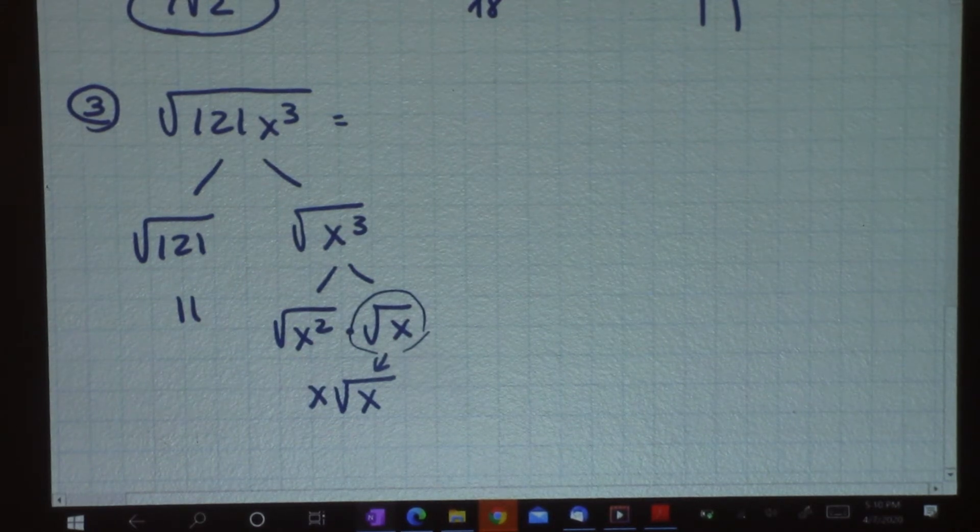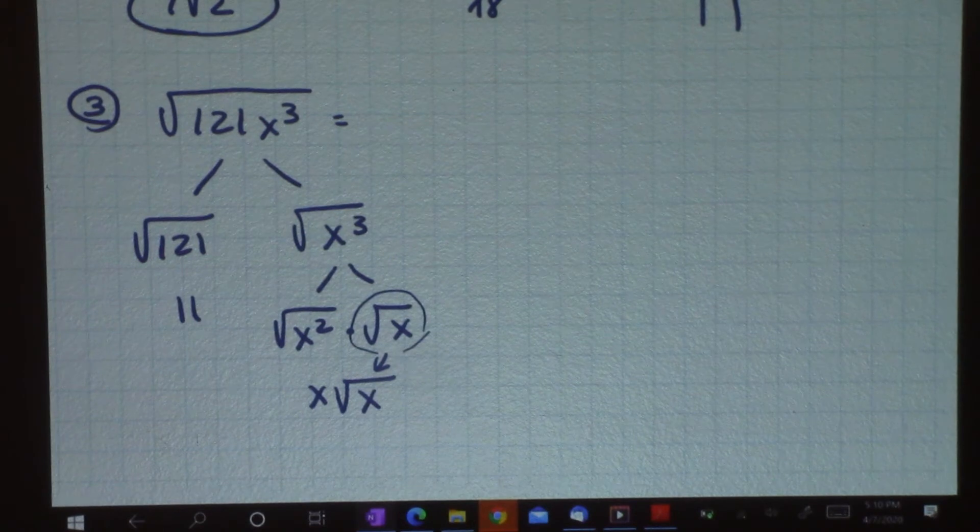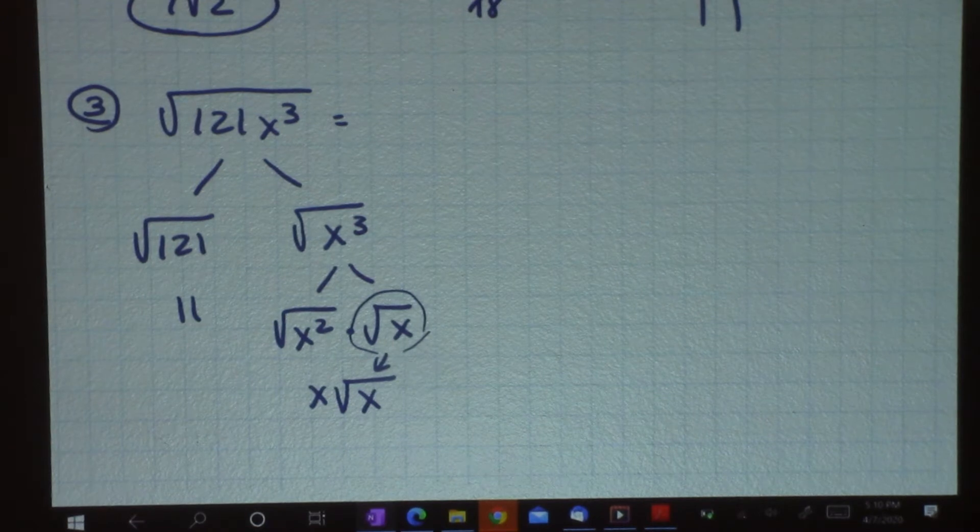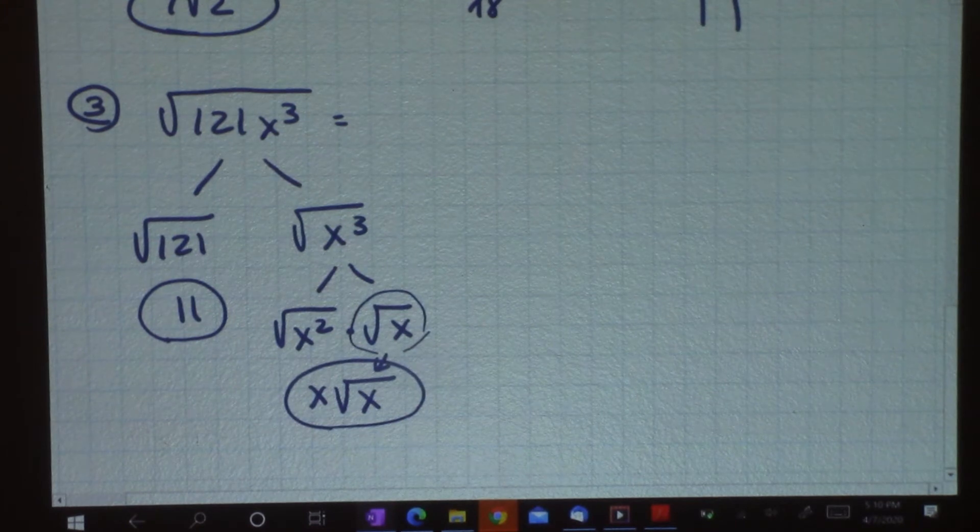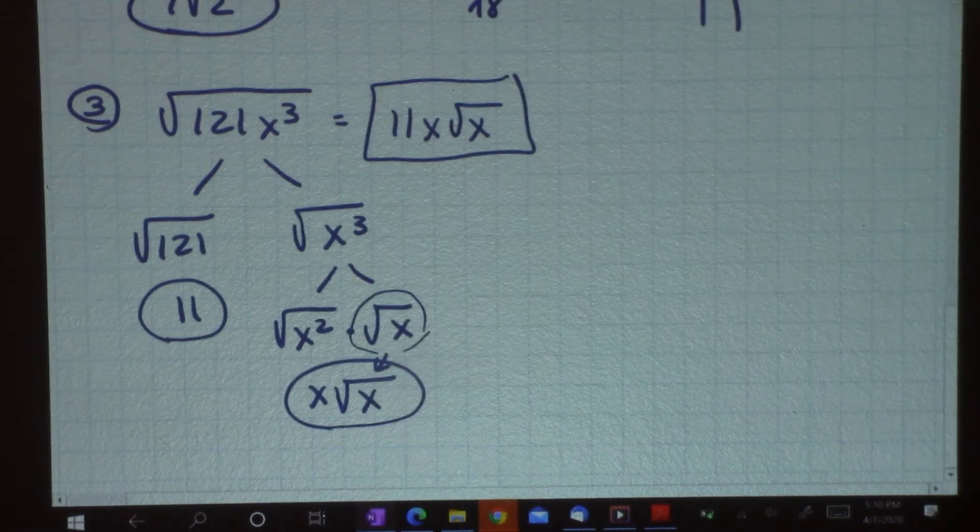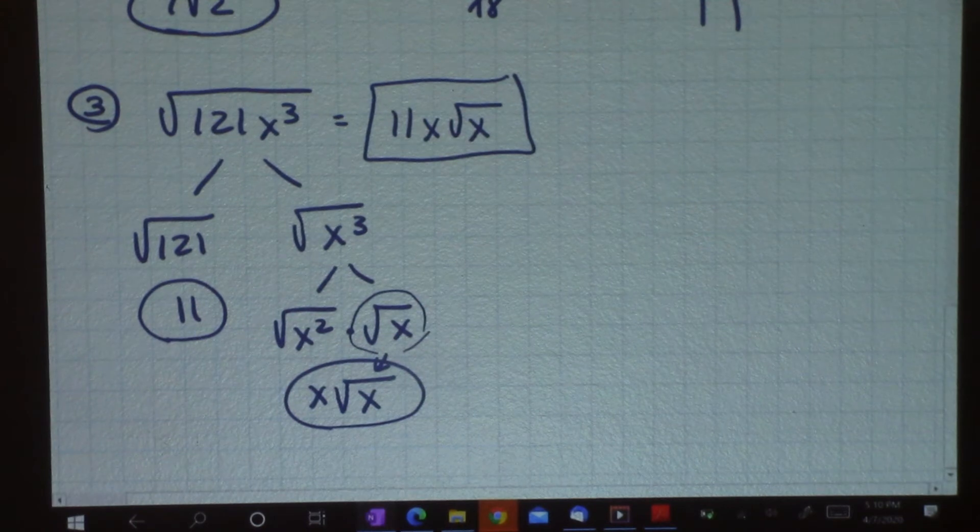When you have an odd number of power, you take the highest number of even power in that. It's usually one less. So I have 11 times x square root of x. And that is the most simplified answer for my problem of the square root of 121 x cubed.